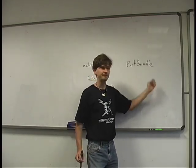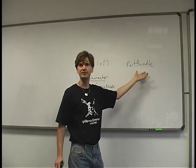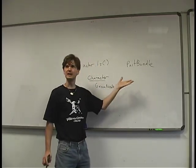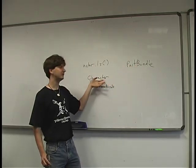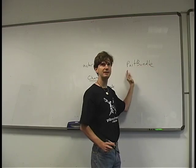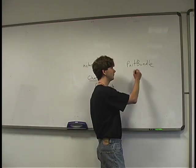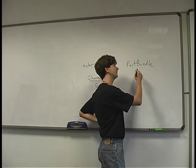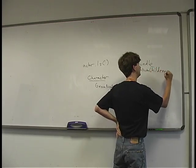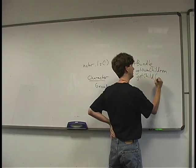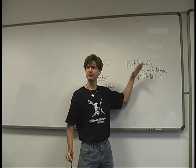Normally there's no need to look inside the PartBundle, but if you're curious or want to get into Panda's internals, you can walk recursively through it using getNumChildren() and getChild(i). Some children of the PartBundle will be of type CharacterJoint — a skeletal joint that stores a matrix, a transform. Every frame as the character animates, the joint's transform changes according to whatever the animation says.